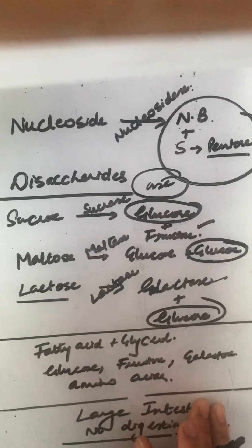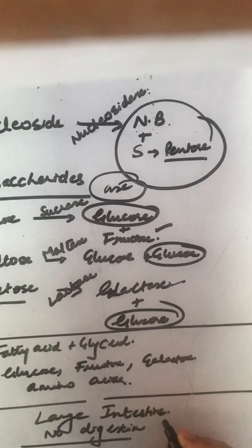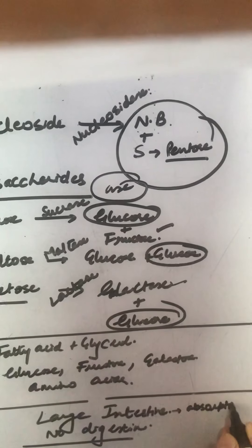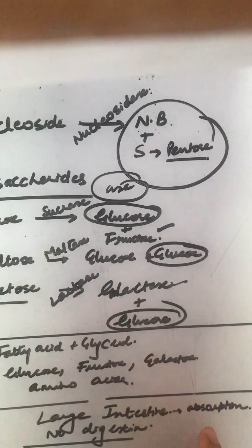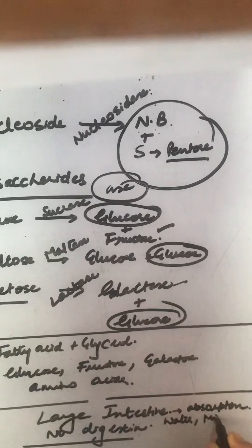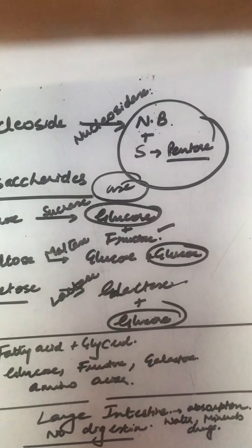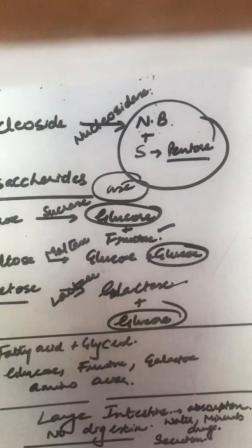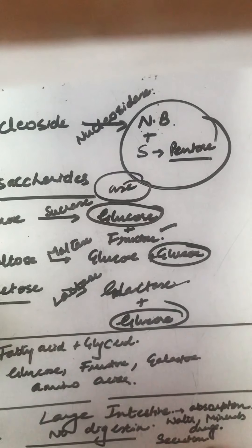The large intestine is mainly responsible for absorption — absorption of water, minerals, and certain drugs. It is also responsible for secretion of certain mucus, which helps in adhering the fecal matter together, and that is stored finally in the rectum region of the large intestine.